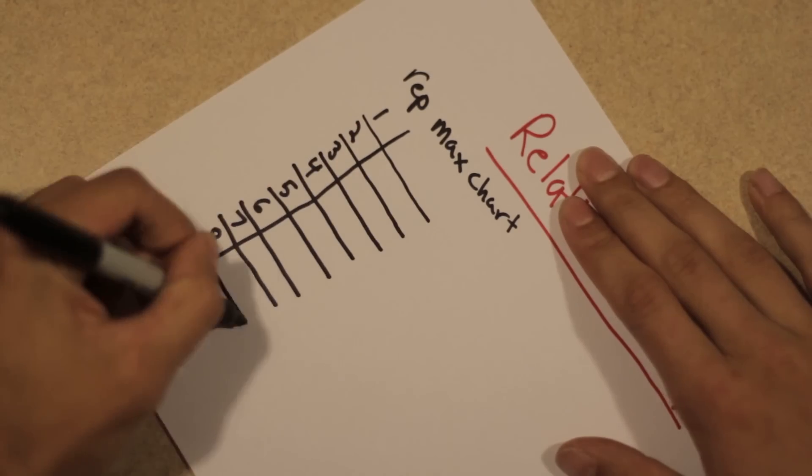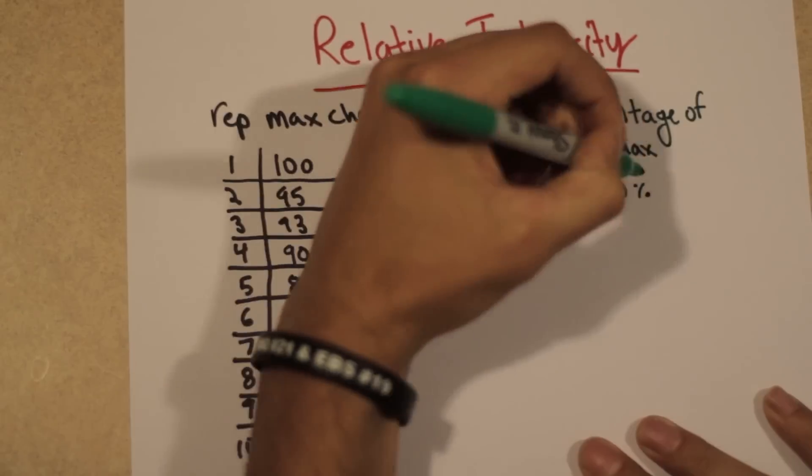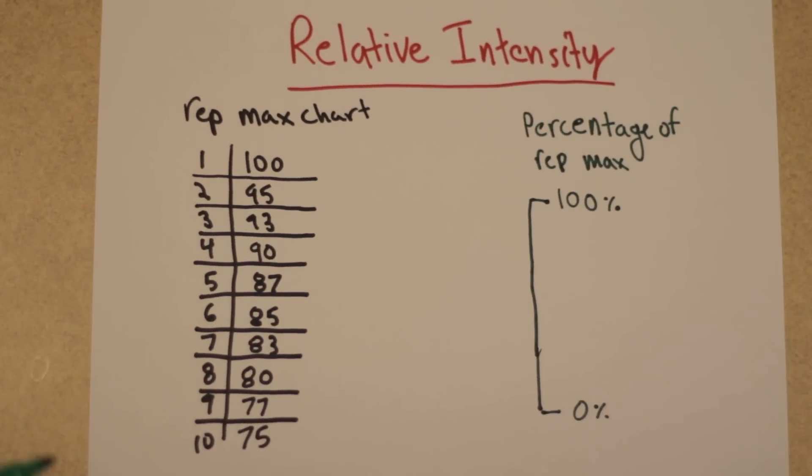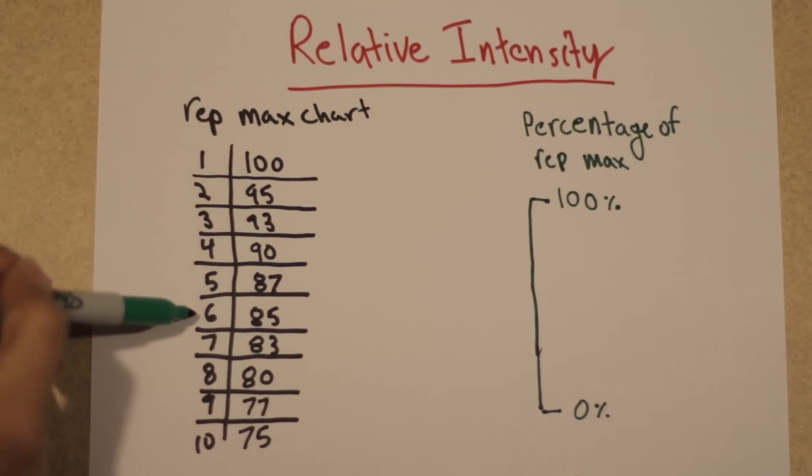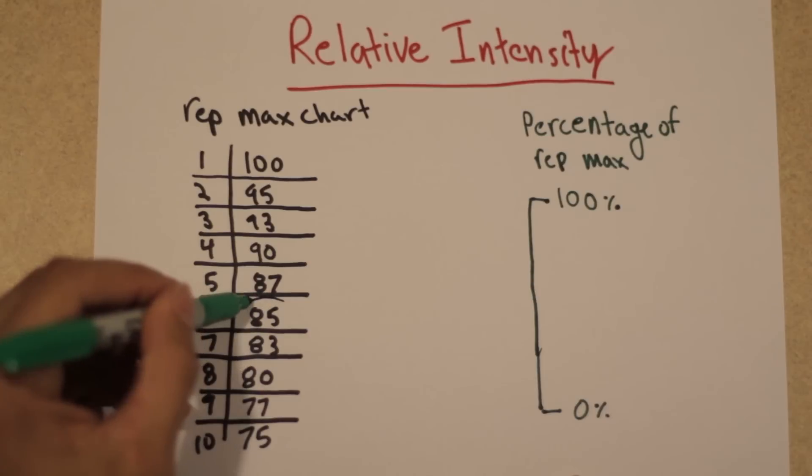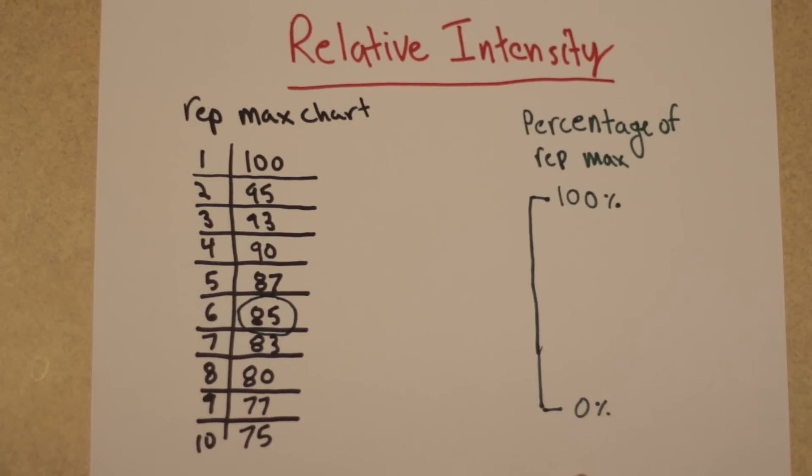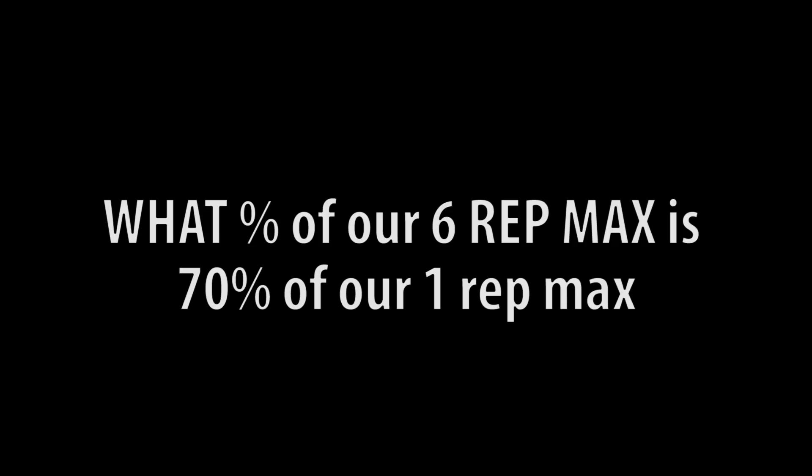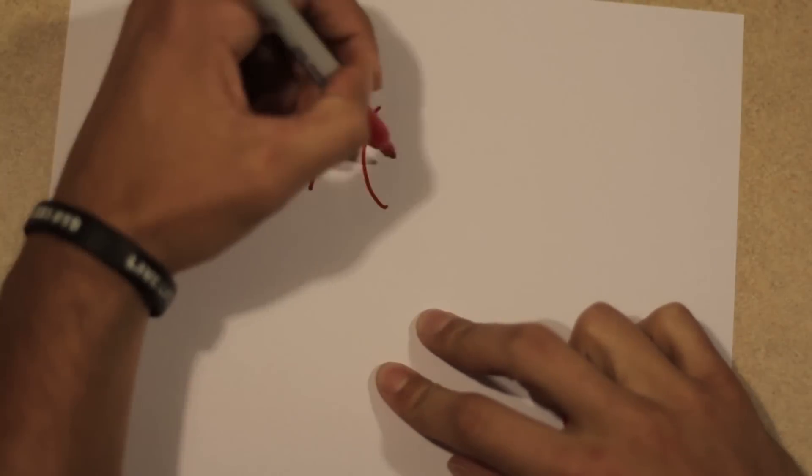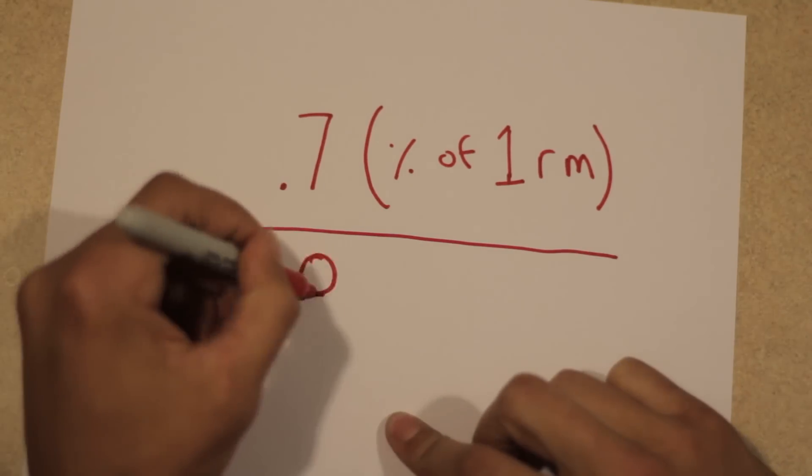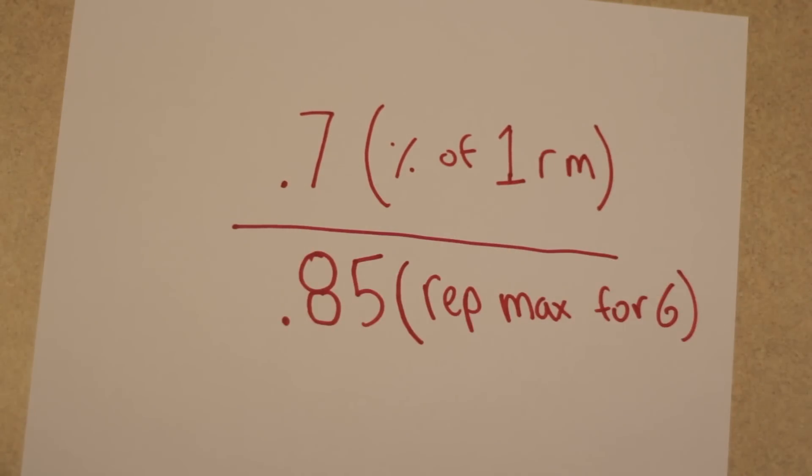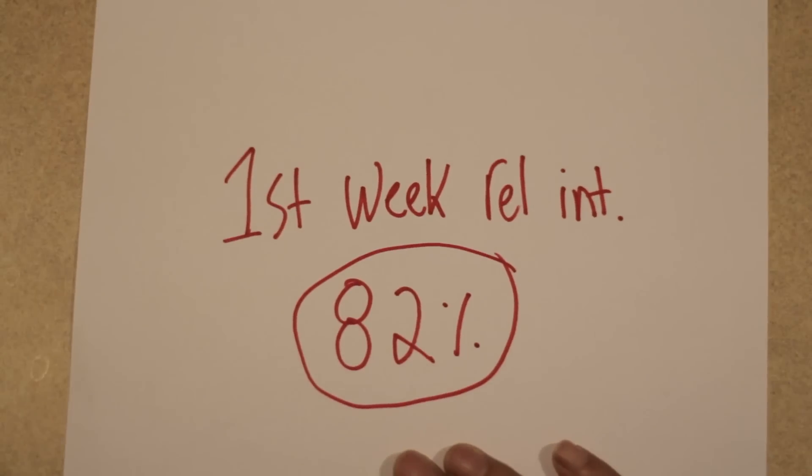Relative intensity deals with what's called a rep max chart and a load's percentage of that given rep max. Let's look at our first week's relative intensity. Using the rep max chart, you will find that six reps has the max percentage of 85%. This means that given our one rep max, we should only be able to hit 85% for an absolute maximum of six reps. So now we need to determine what percentage of 85% would give us 70%, our working intensity. All we do here is divide 0.7, which represents 70%, by 0.85, which represents 85%. Thus our first working sets are at a relative intensity of 82%.